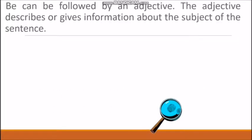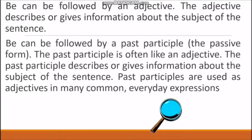In this case we are using the past participle as adjective, because it gives us the idea of what is the status of Paul. The rule is: BE can be followed by an adjective — the adjective describes or gives information about the subject. BE can also be followed by the past participle, which often acts like an adjective and describes the subject of the sentence.